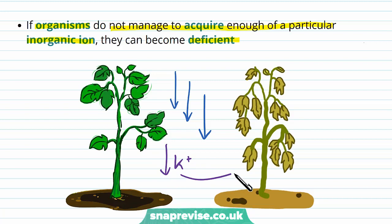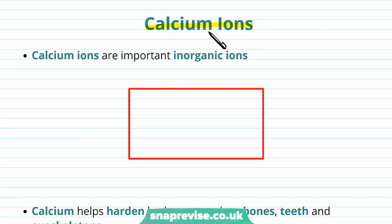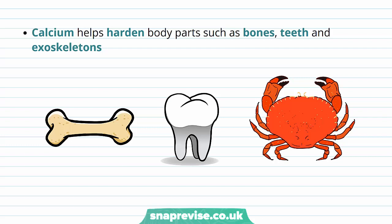Calcium ions are a very important inorganic ion for lots of different organisms. The formula for calcium is given as Ca2+, making it a cation because it's positively charged. Calcium is important in lots of structures, and it helps mainly harden particular body parts like the bones, the teeth, and exoskeletons. The bones and teeth must be very hard for withstanding mechanical forces and support, and the exoskeleton of particular creatures like crabs or some insects helps to make it protective and overall a hard material.